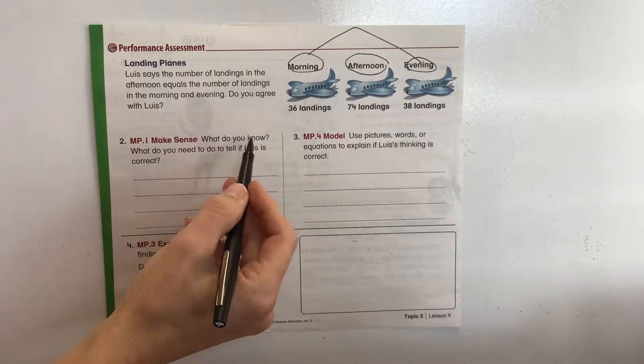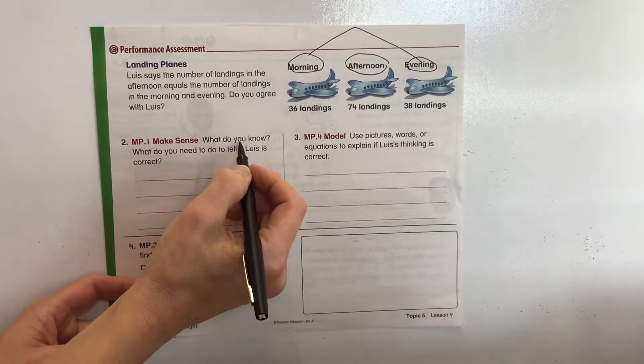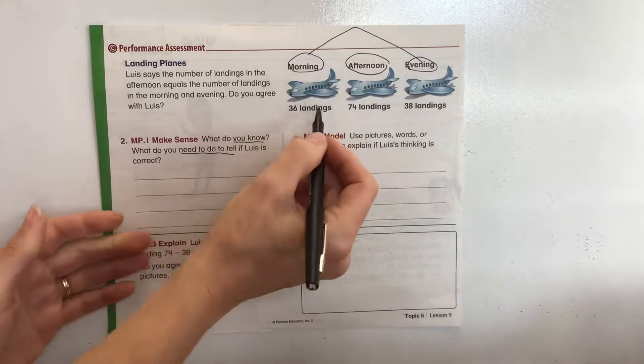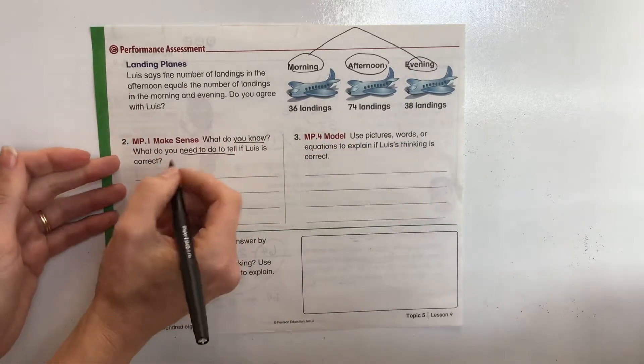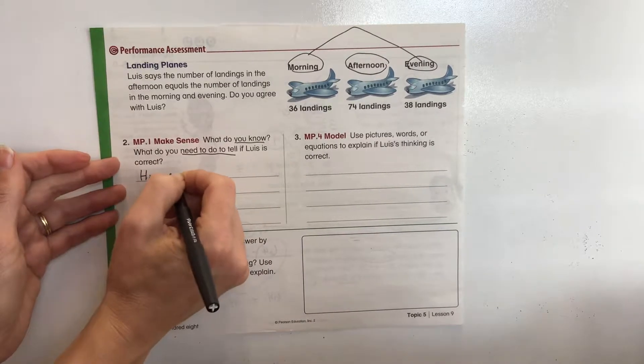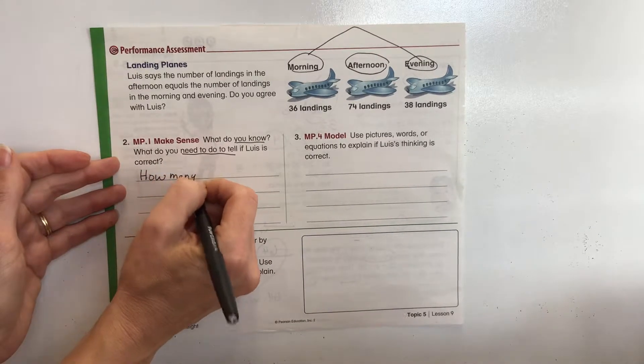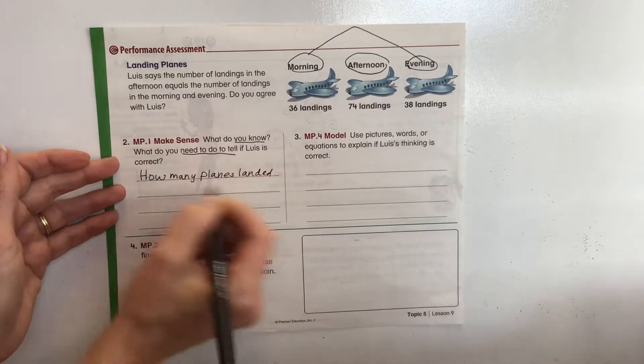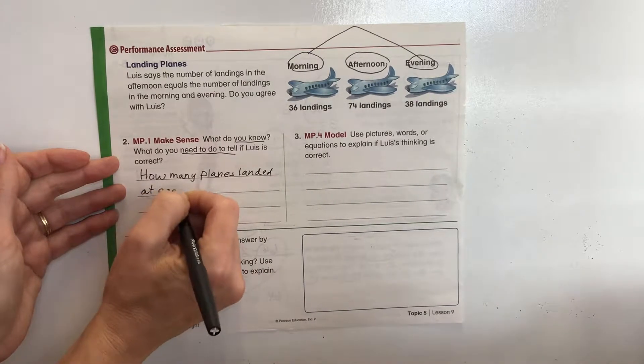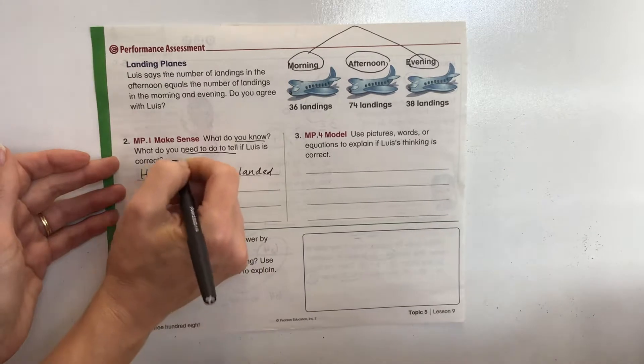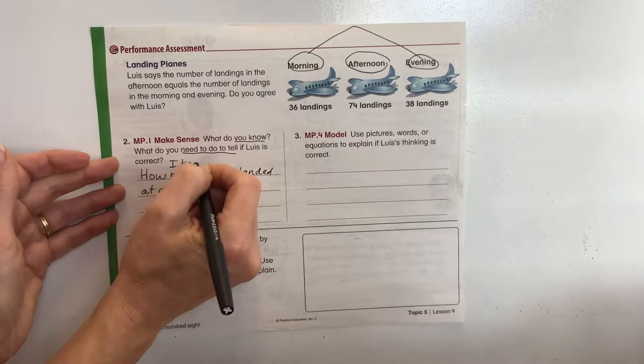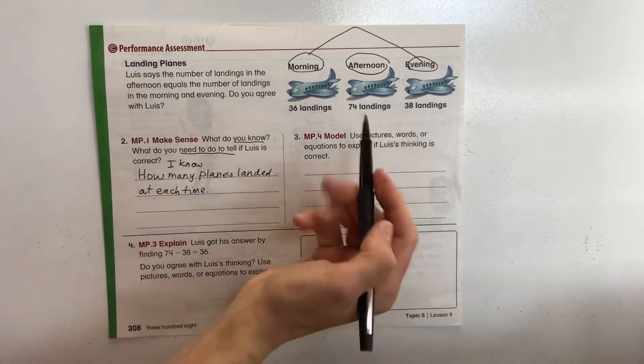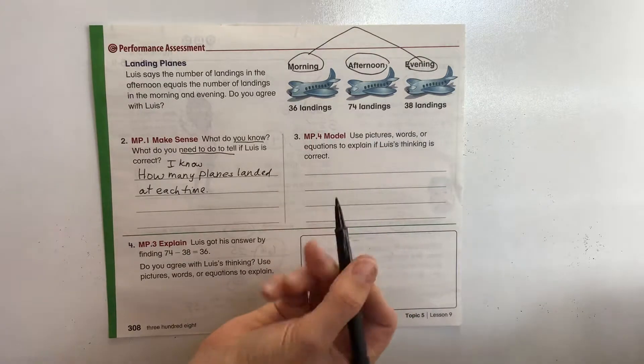So the first thing we need to do, what do you know? What do you need to know? So we know how many planes landed at the different times. So you can say, how many planes landed at each time. I know. I need to find out if 74 equals 38 plus 36.